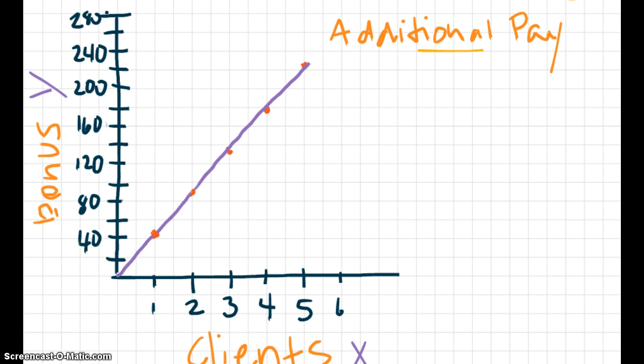Our clients are on the X axis because they are the independent variable. That is, they stand alone. The bonus is on the Y axis because that is the dependent variable. The bonus pay depends on the number of clients. So you just have to think about what depends on what.